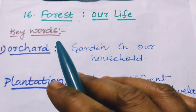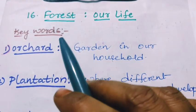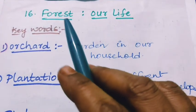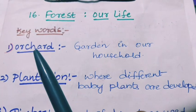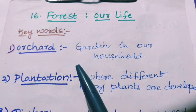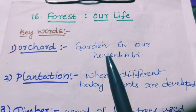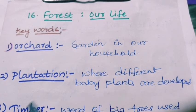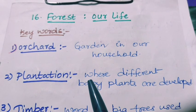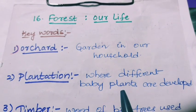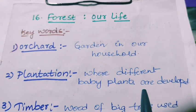Hello students, today we are going to discuss keywords of the lesson 'Forest Our Life.' First keyword: orchard. Orchard means it is a garden in our household. Plantation means where different baby plants are developed — that is, simply we can call it a nursery.